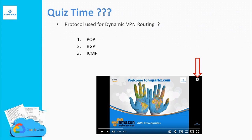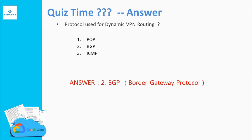It's quiz time! Please answer this quiz by clicking the top right corner of your screen. The question is: what is the protocol used for dynamic VPN routing? The options are BGP or ICMP. The answer is BGP — Border Gateway Protocol.